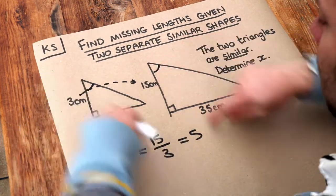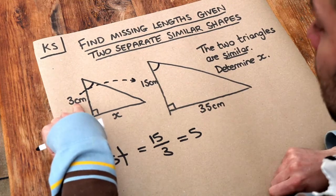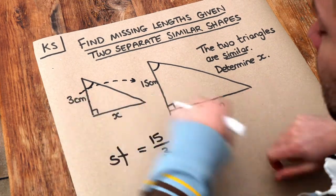And we have to use two comparable lengths, so in this case we use the height of each. We can't for example use the 3 and the 35 because they're different sides.